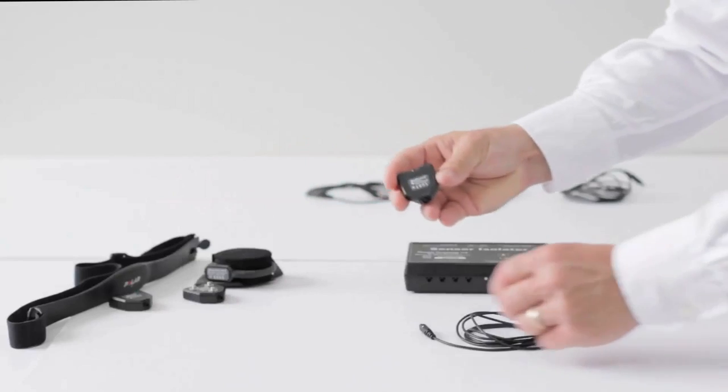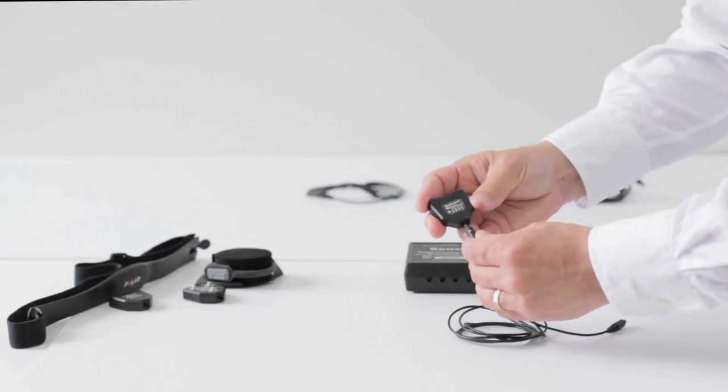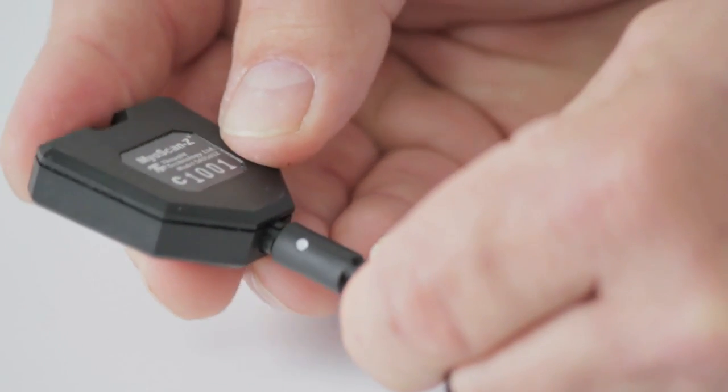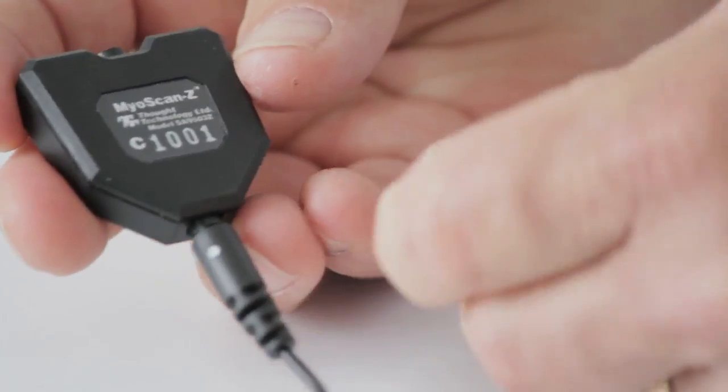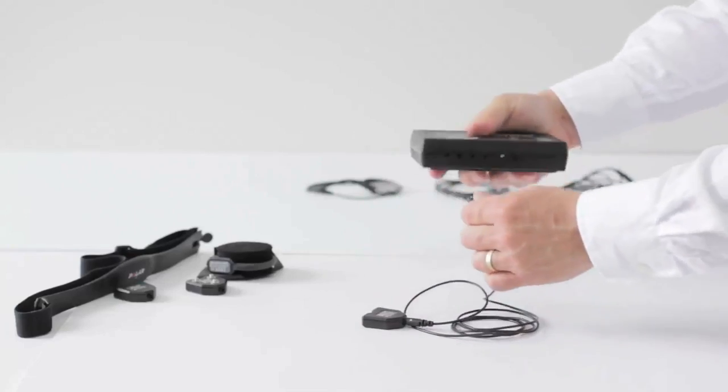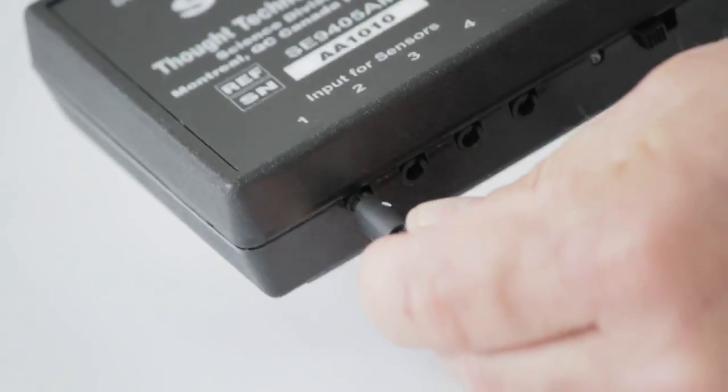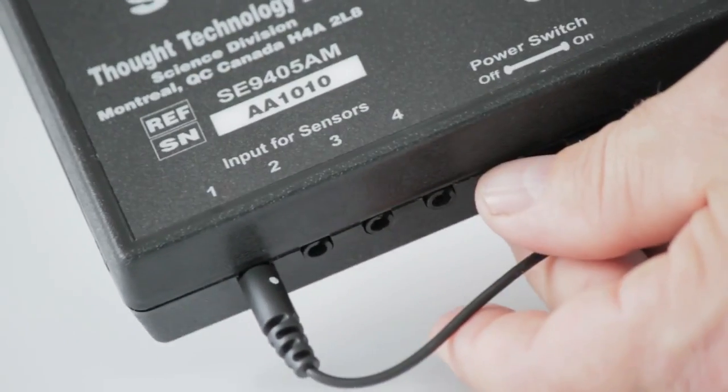First, you will need to set up the sensors by making the following physical connections. Connect each sensor to the sensor isolator using the provided sensor cable. In this case, the Myoscan amplifier used for surface EMG will be connected to channel 1.